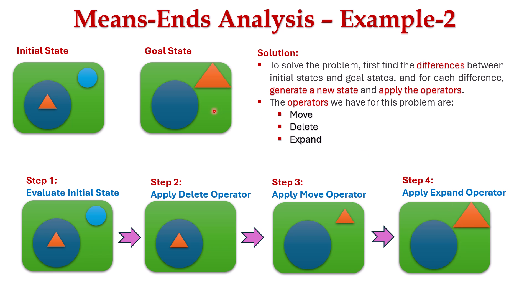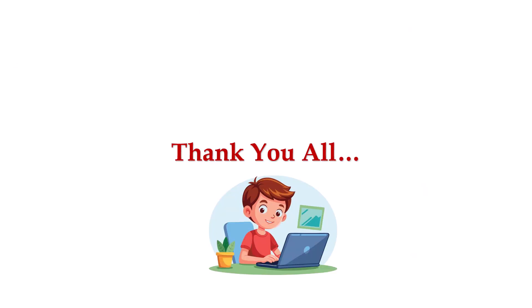We have successfully transformed the initial state to the goal state using three simple operations: delete, move, and expand. Means-ends analysis works by identifying the differences between states and selecting operators to reduce the difference between the initial state and goal state. Thank you all.